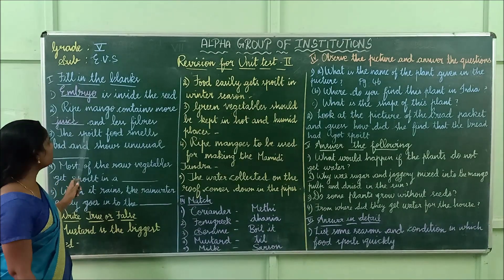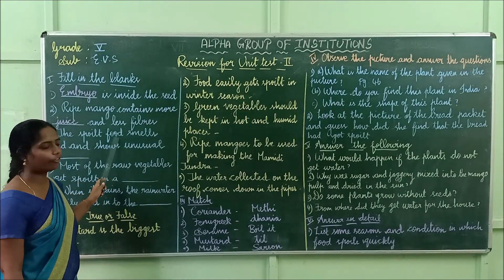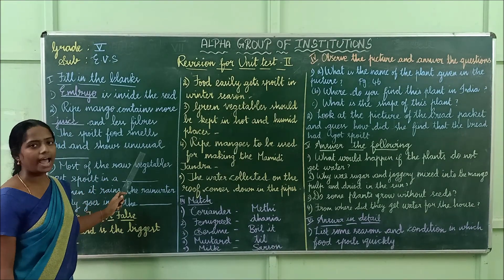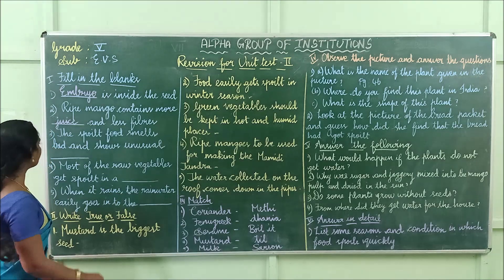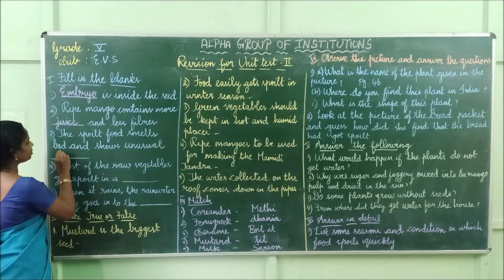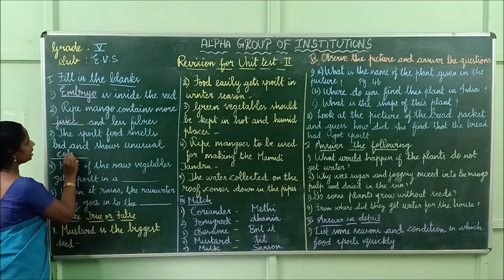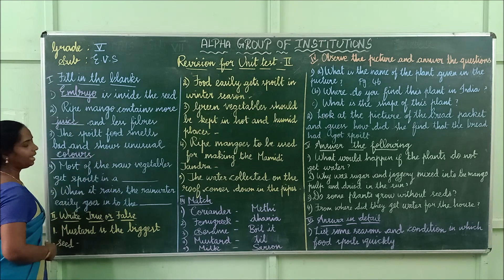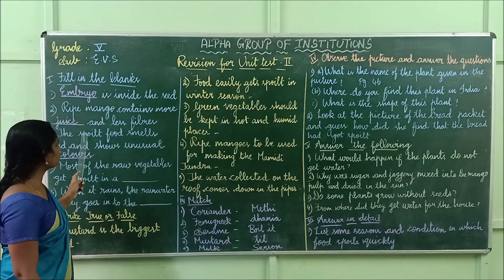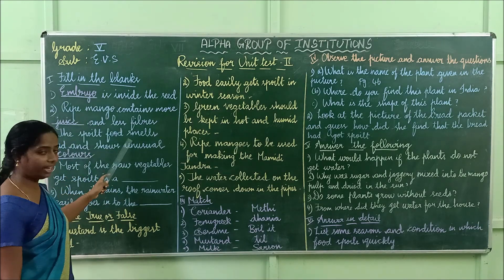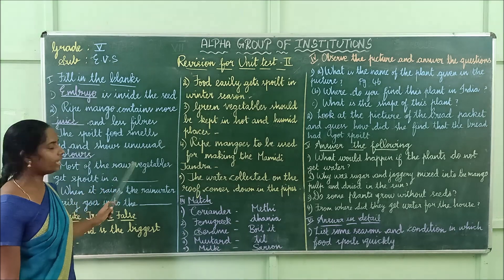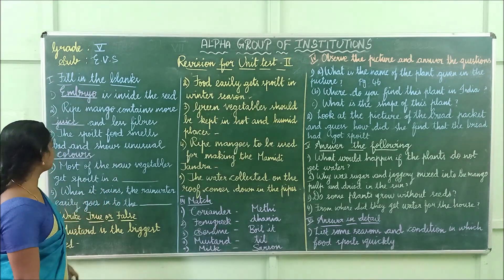Third one: the spoiled food smells bad and shows unusual colours. Spelling of colours: C-O-L-O-U-R-S. The spoiled food smells bad and shows unusual colours.